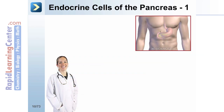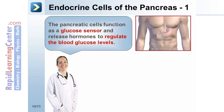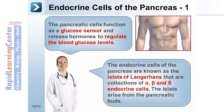Now let's take a look at the endocrine cells of the pancreas. The pancreatic cells function as a glucose sensor and release hormones to regulate blood glucose levels. The endocrine cells of the pancreas are known as the islets of Langerhans, which are collections of alpha, beta, and delta endocrine cells that arise from the pancreatic buds.